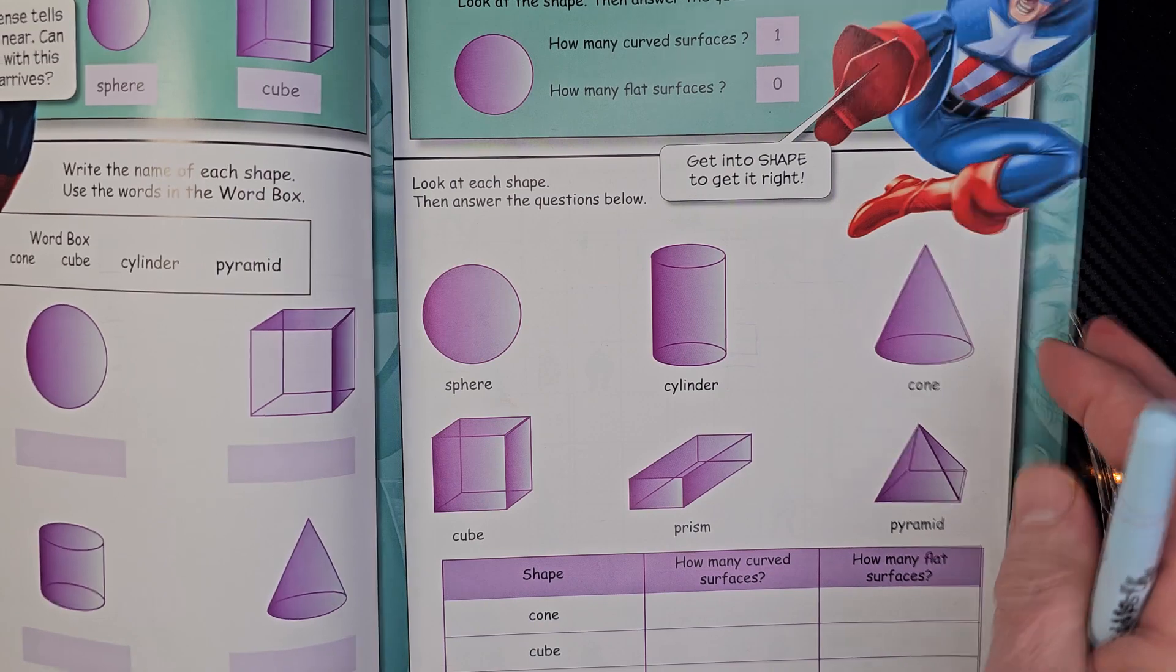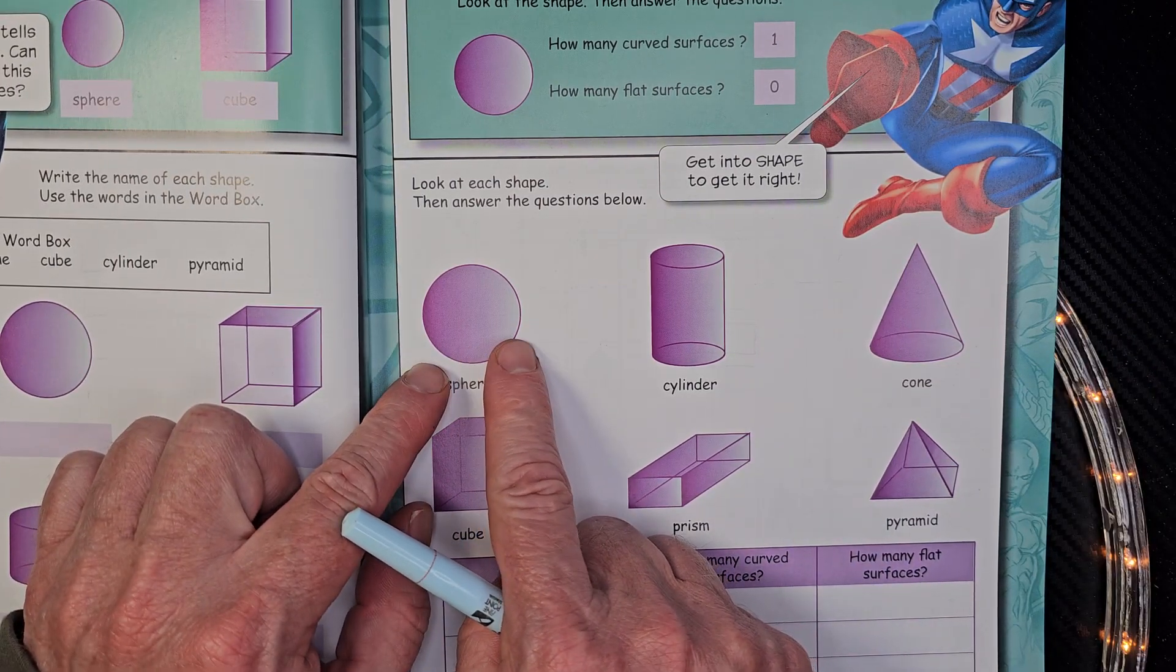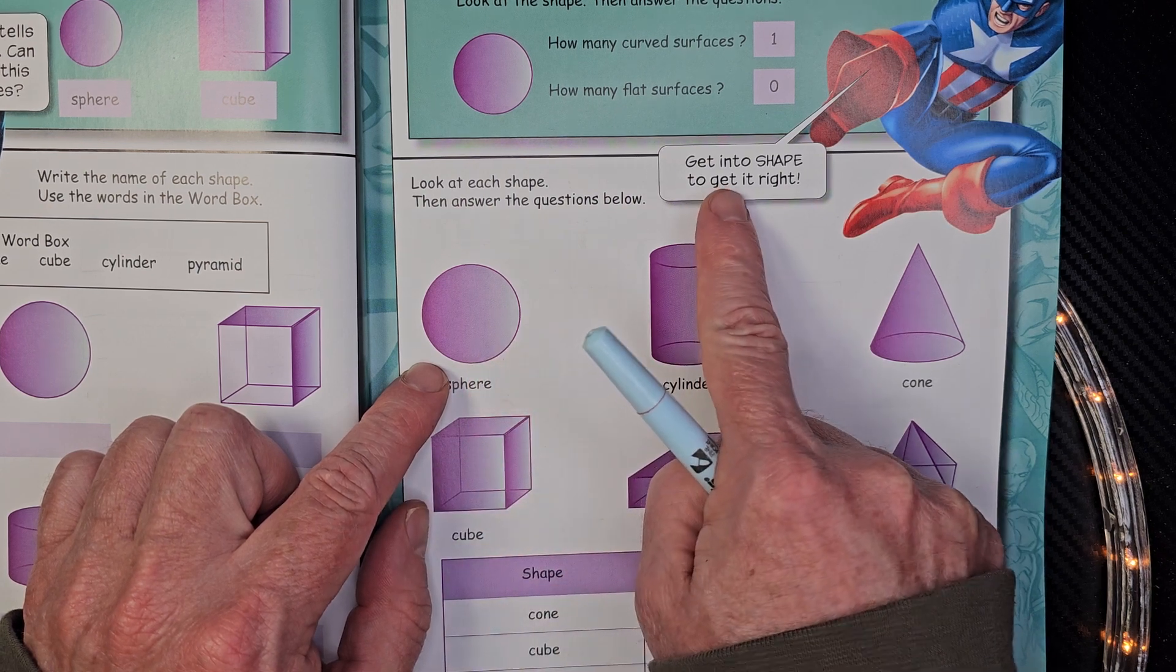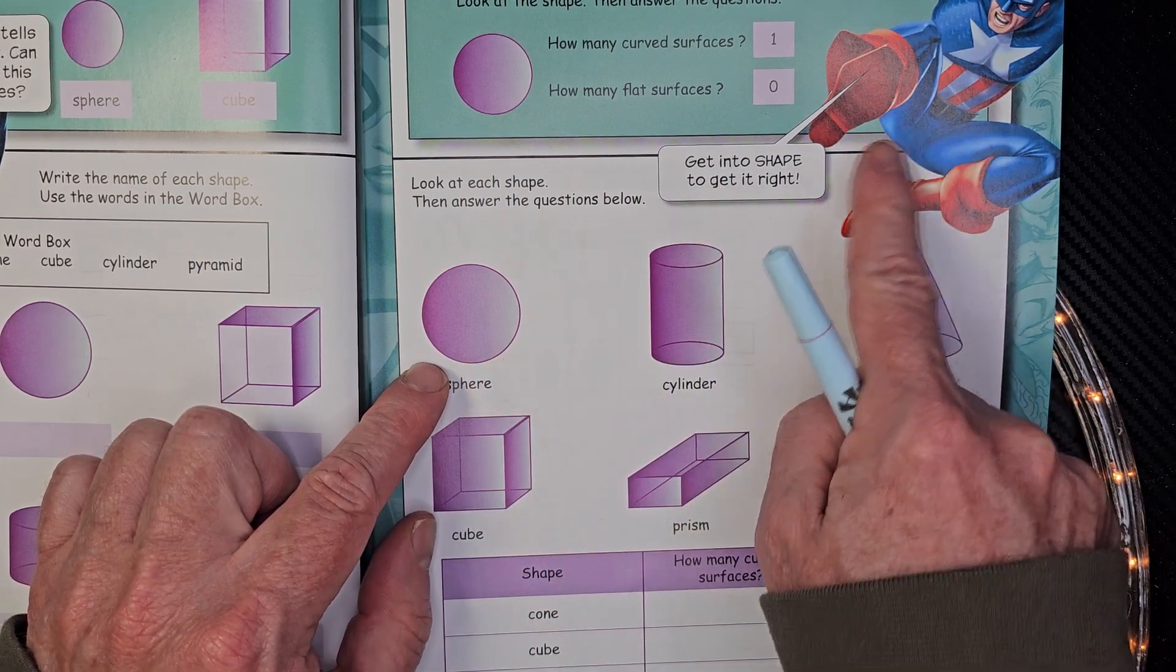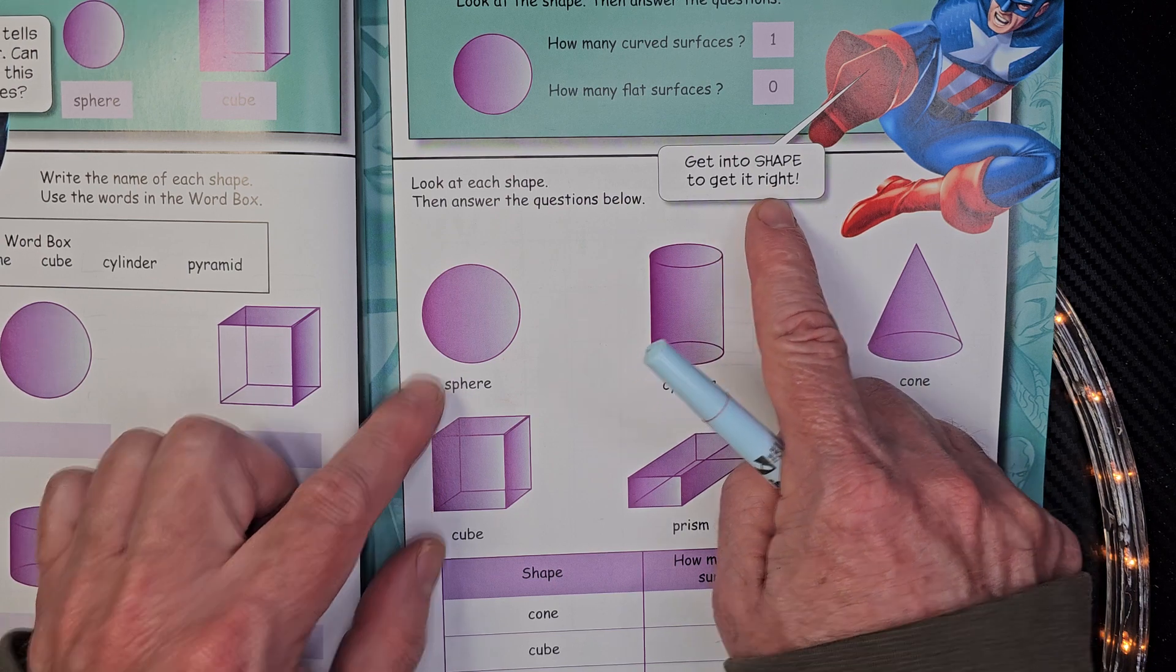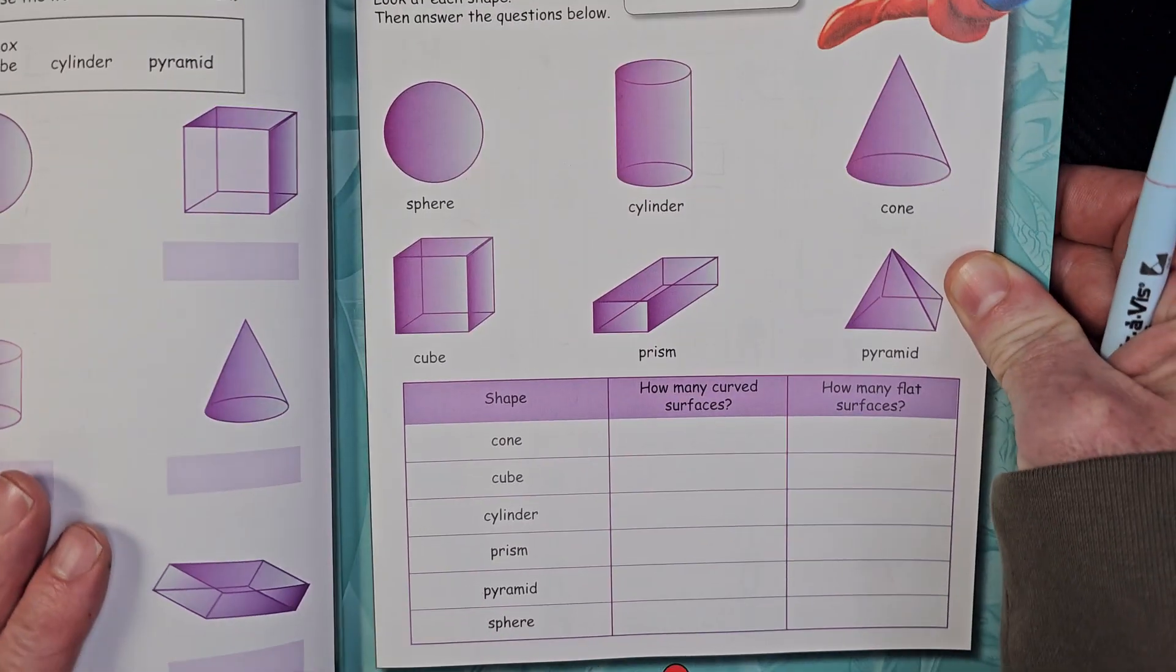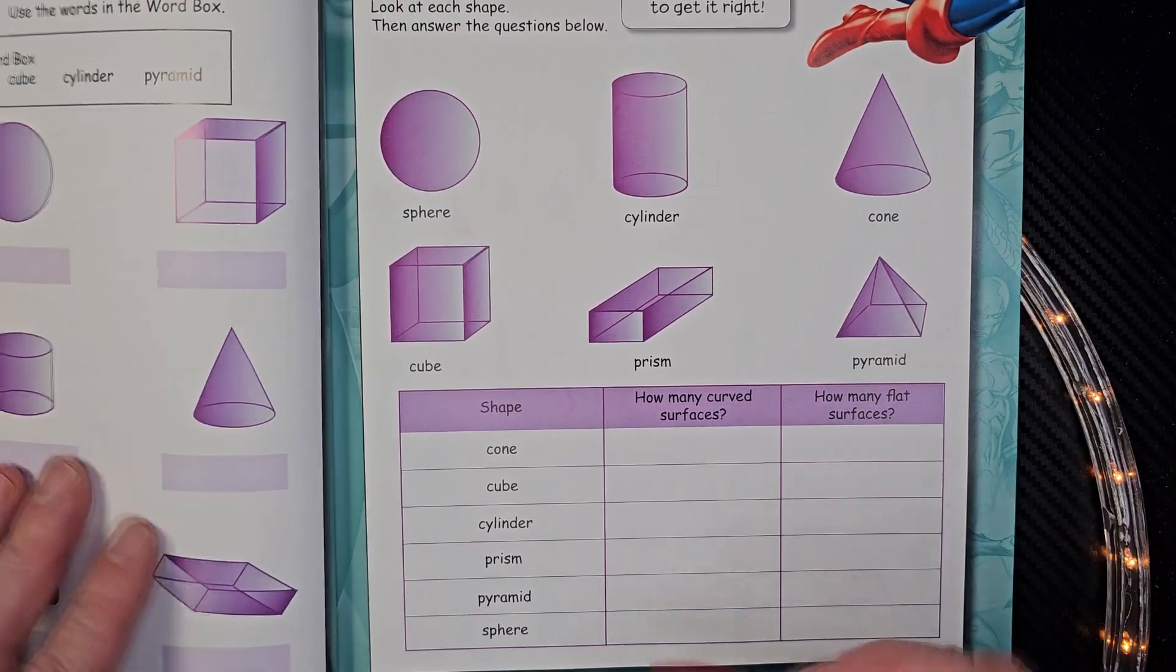Alright, let's go ahead and take a look at these right here. Look at each shape, then answer the question. Alright, so Captain America says, get into shape. Get into shape to get it right. Alright, so we take a look down here at these questions. Let me bring the book up a little bit higher here, so you can see that.